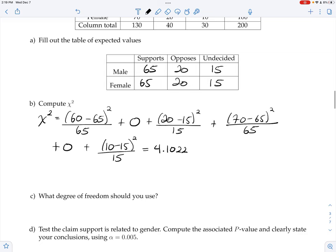Degrees of freedom: rows minus 1, which is 2 minus 1, times columns minus 1, which is 3 minus 1, gives us 2.